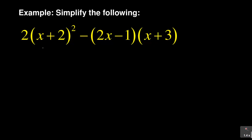If you're going to be able to do it properly, you need to be very sensitive to a few things. The first thing to identify is that this particular 2 is multiplying the whole of the bracket squared. Also, this negative is affecting everything after it. But before you do anything, you need to open that bracket.